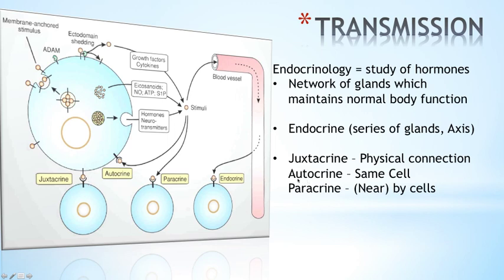Autocrine means that the same cell produces a substance that it uses itself. For instance, a T cell going through monoclonal expansion that wants to become activated produces interleukin-2. The interleukin-2 produced then comes back to the same cell and is used by that cell, leading to upregulation.